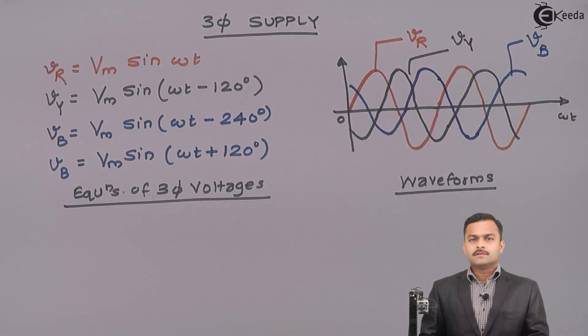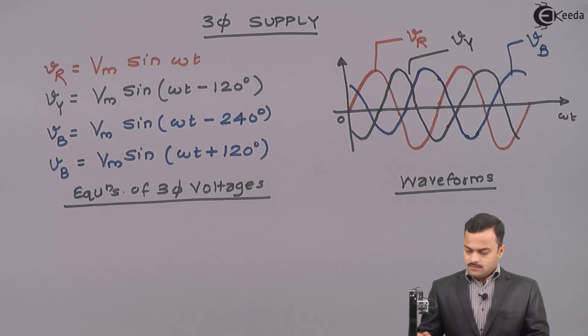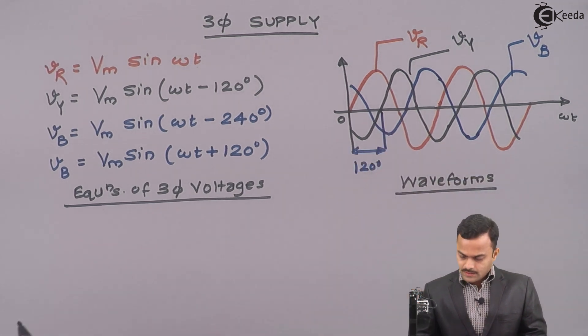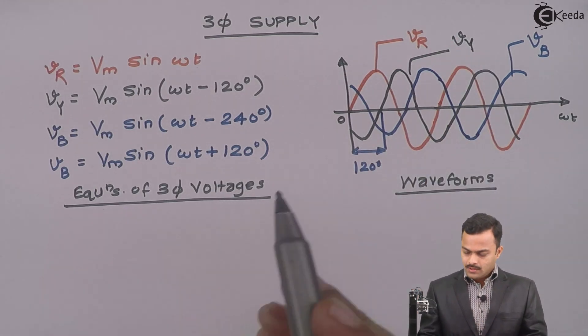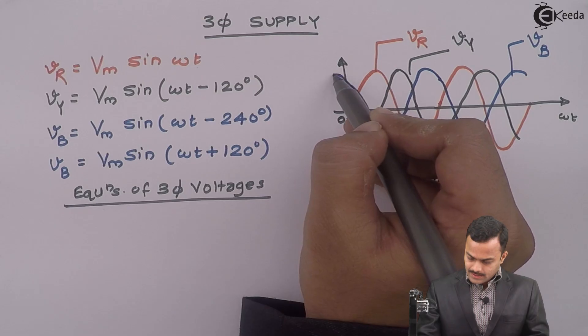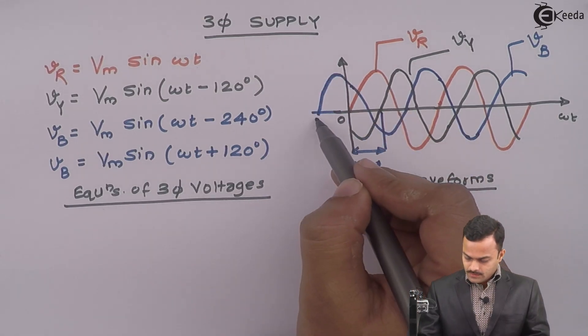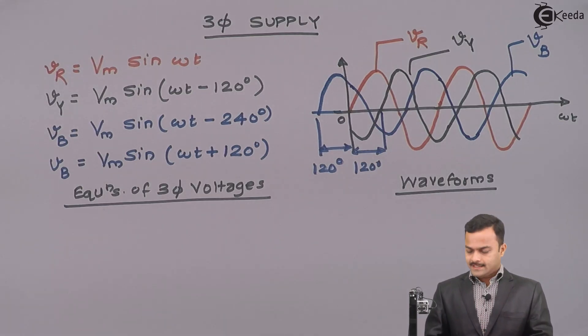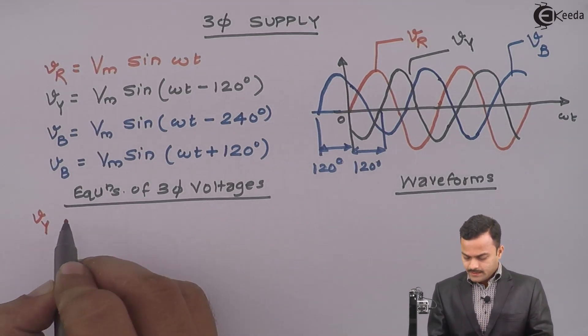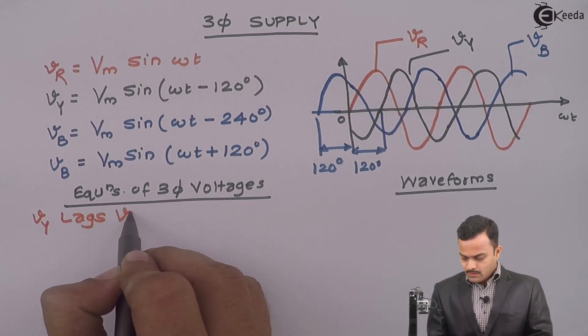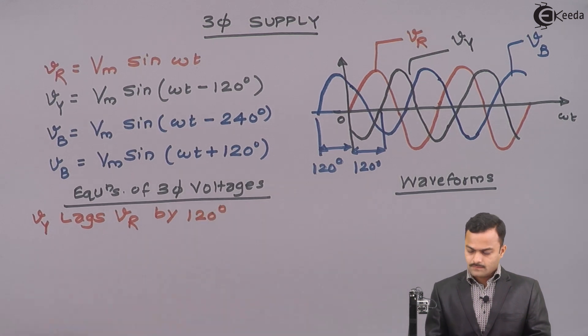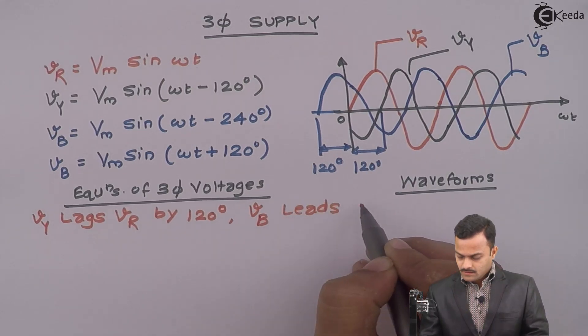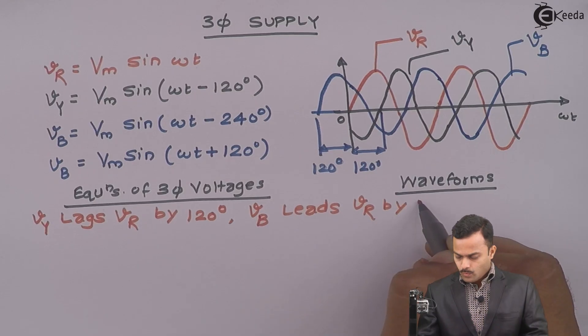The phase difference between them is 120-degree. Now, if this is 0, obviously, this is 120-degree. So, Vy lags Vr by 120-degree. Whereas, if I continue this like this, it is starting from this point. From here to here, it is 120-degree. So, what I can say is Vy lags Vr by 120-degree and Vb leads Vr by 120-degree.